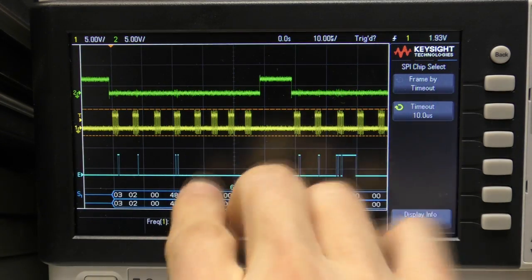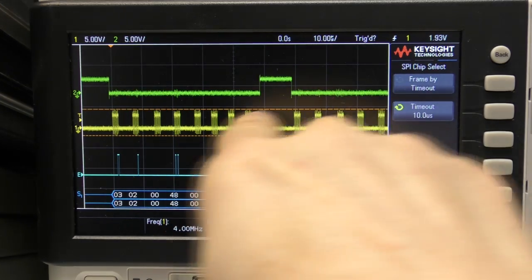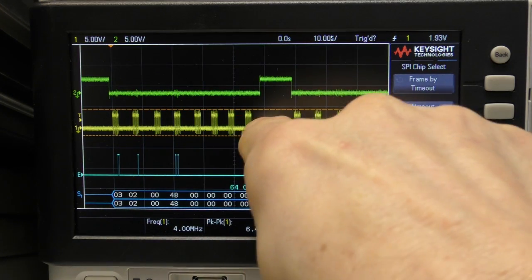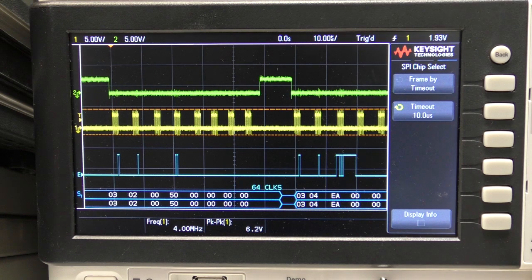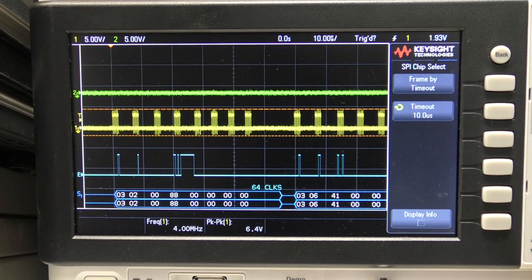For example, here, it should detect a new frame here. So we can now disconnect our chip select, and it'll still decode, which is great. We've got a new spare channel.